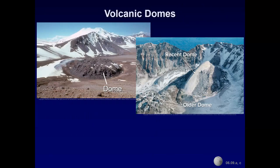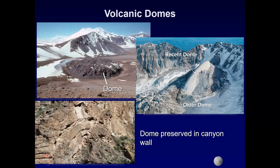Back to volcanic domes. They can have a rubbly appearance — the surface of the dome consists of angular blocks of rock. They usually form in clusters and can erode over time into less obvious dome shapes. This older one looks rubbly while this newer one from Mount St. Helens is smoother. Here's an old dome preserved in a canyon wall in Arizona, so you can see it in cross section.